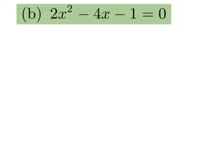Because this is an equation, we can divide both sides by the leading coefficient, 2 in this case. So if we divide both sides of the equation by 2, we are left with x squared minus 2x minus 1 half equals 0. So we've divided everything here by 2.